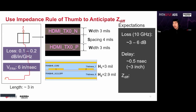Nathan got the ohm symbol in there — impressive! To answer Nick's question, the dielectric constant for FR408 is about 3.2 to 4.